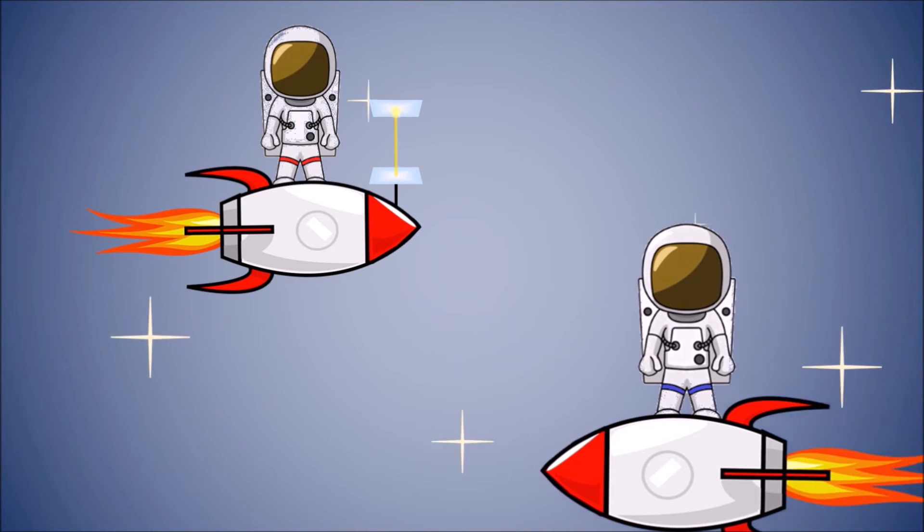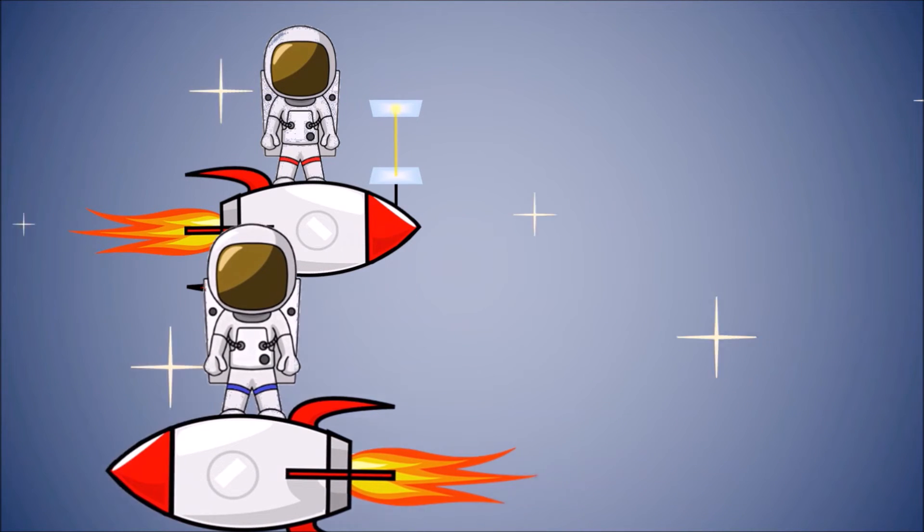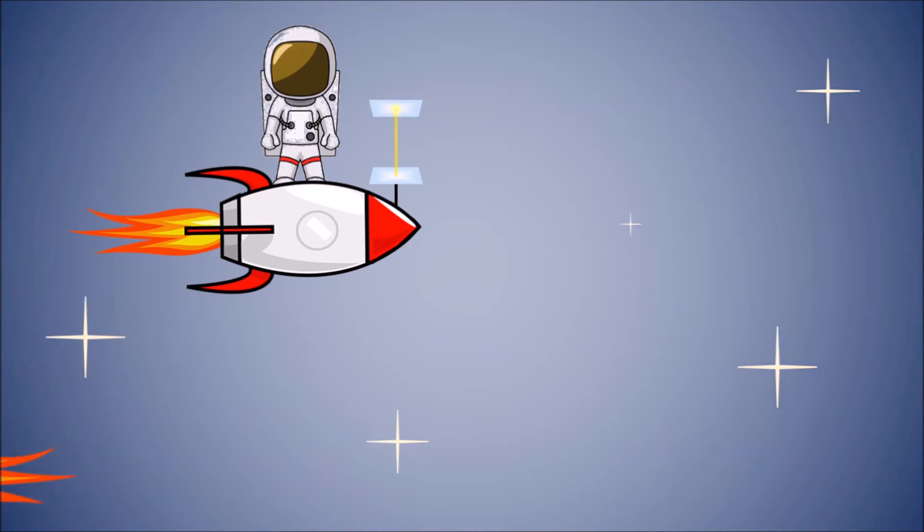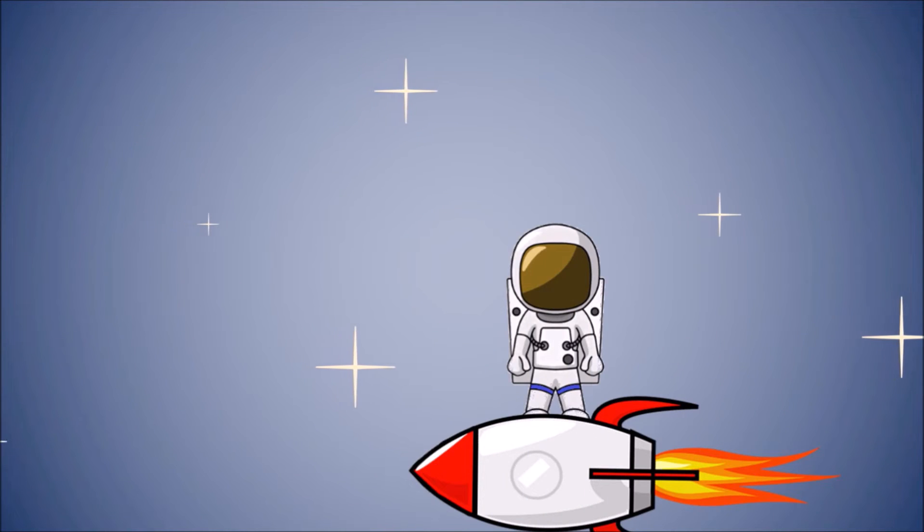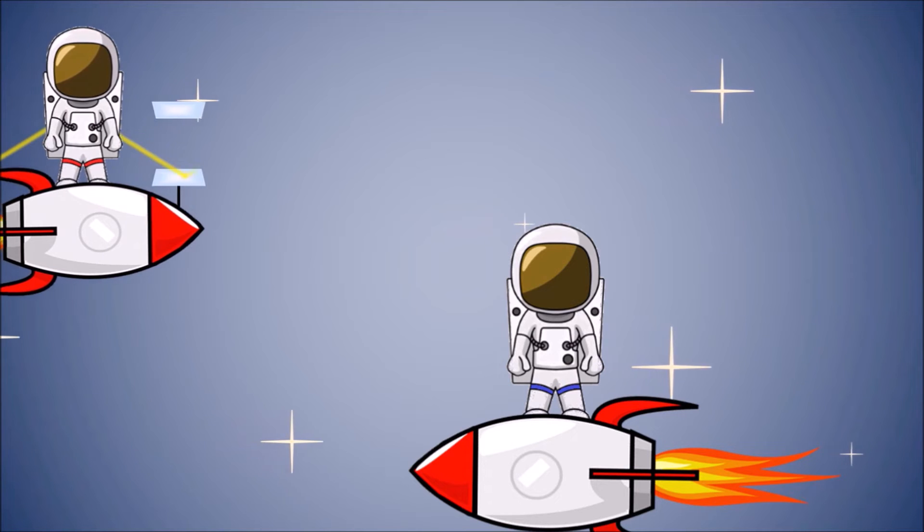At a certain moment, James' spaceship passes by. James can see Jean-Luc's mirror clock. James is moving with a certain speed relative to Jean-Luc. In other words, Jean-Luc's mirror clock is moving with a certain speed relative to James.